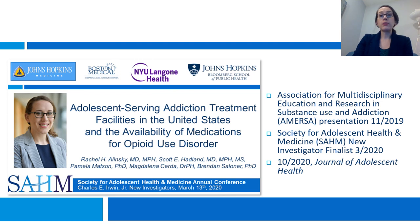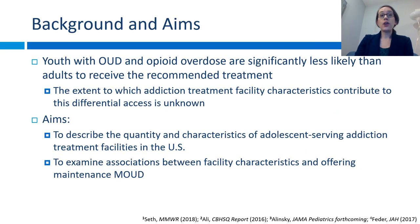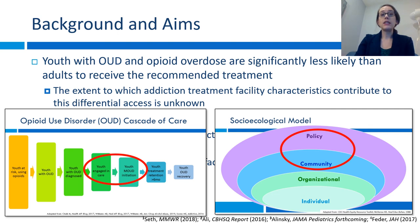Thinking about that network of providers able to continue treatment after an overdose, I was interested in looking at adolescent-serving addiction treatment facilities throughout the U.S. and the availability of medication for opioid use disorder specifically. Youth with opioid use disorder and overdose are significantly less likely than adults to receive the recommended treatment, but the extent to which treatment facility characteristics contribute to this differential access is unknown. My aims were to describe the quantity and characteristics of adolescent-serving addiction treatment facilities and to examine the associations between facility characteristics and offering maintenance medication — looking at engagement in care, initiation of meds, and community and policy level factors.